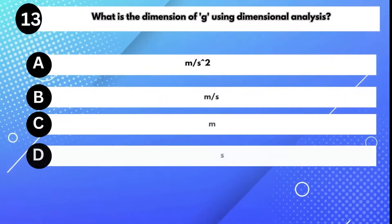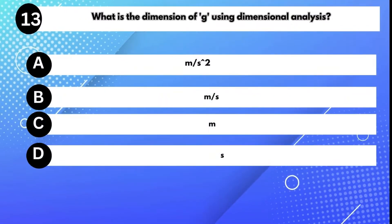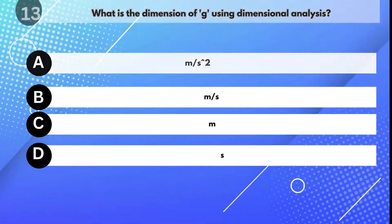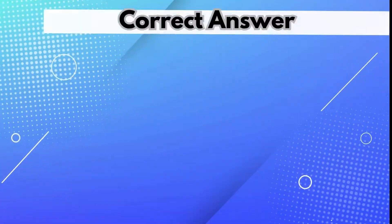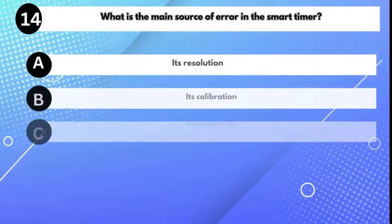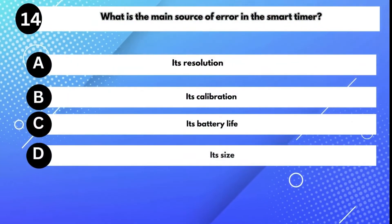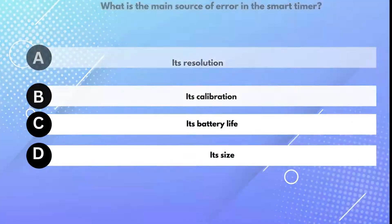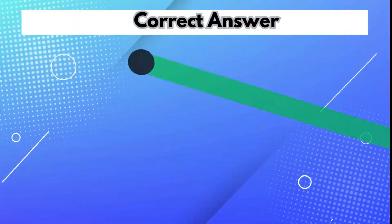What is the dimension of G using dimensional analysis? Answer A: m/s². What is the main source of error in the smart timer? Answer A: Its resolution.